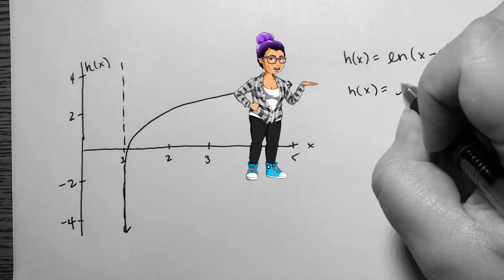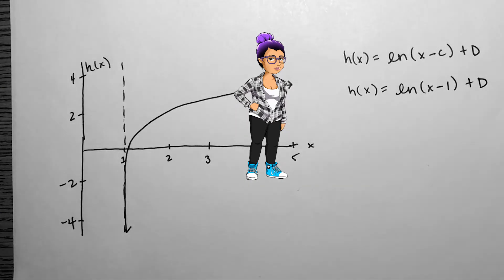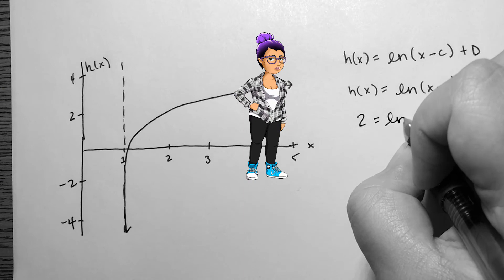Now to find d, I need an extra point I have not yet used. The x-intercept isn't clear, so I'll find a different point, perhaps 2, 2.